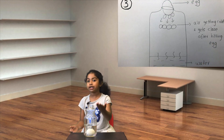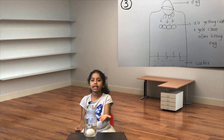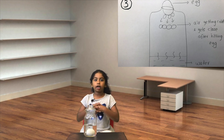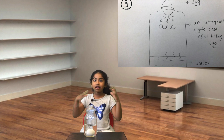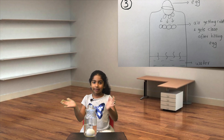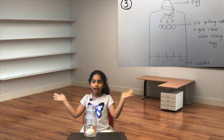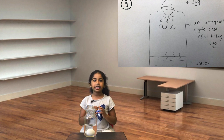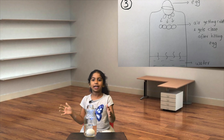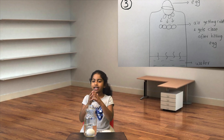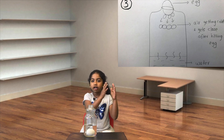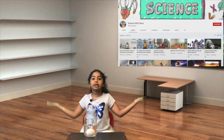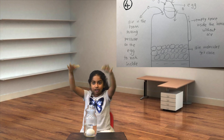The hot air touches the egg and it becomes cooled. The molecules — they were spread out like this, but now they're together and really close to each other. Because they're so close, they're taking up less space, so there's remaining space inside the bottle.